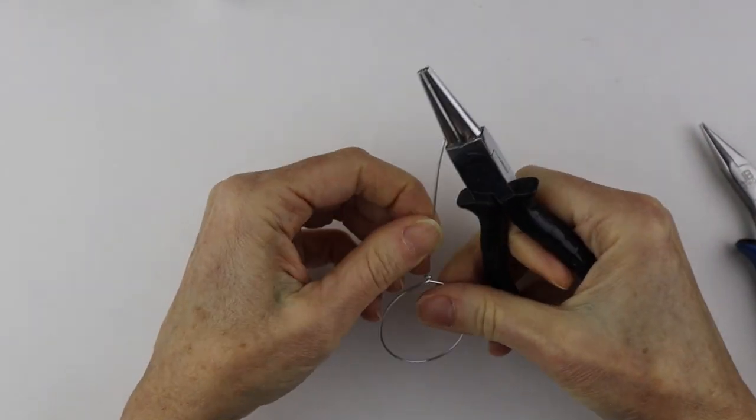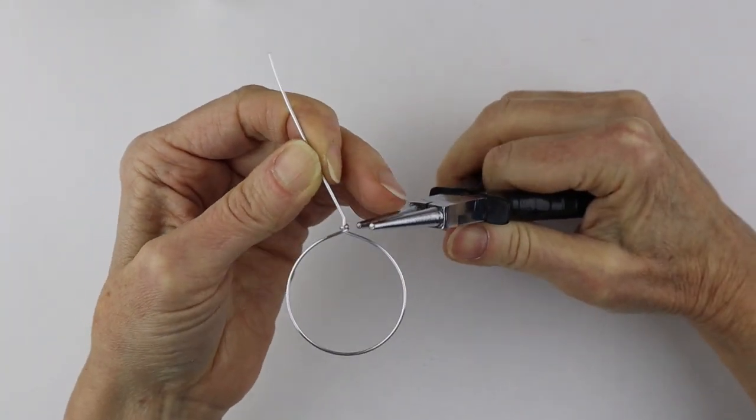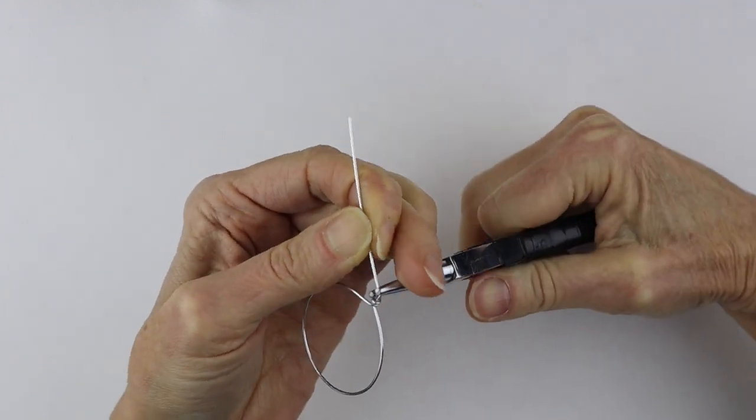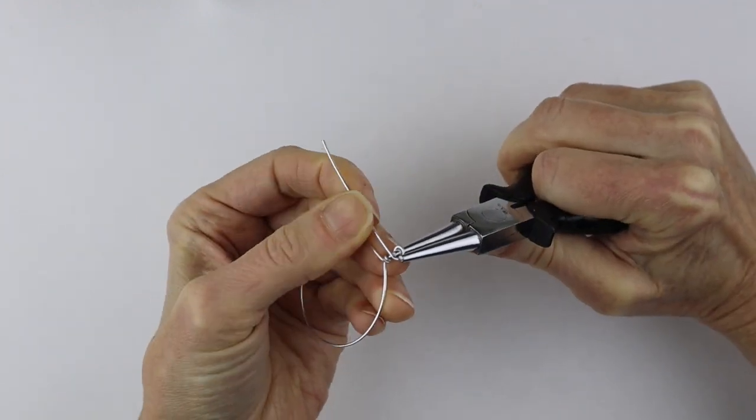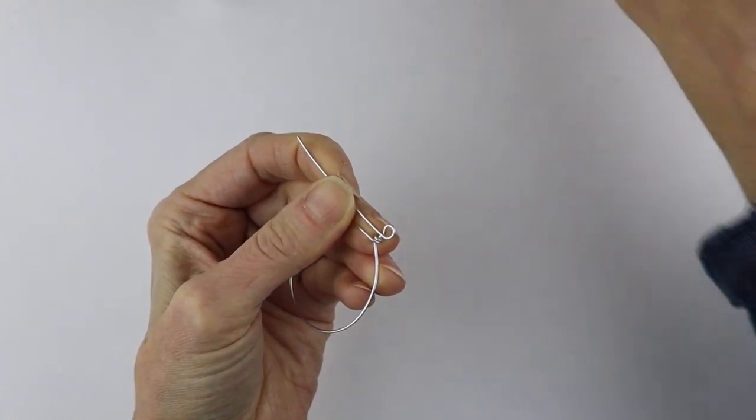just get your round pliers. If you're adding a jump ring to it, you can just bend this parallel to the actual piece. If you want to put it directly on a cord, I would bend the loop perpendicular so it will sit nicely.